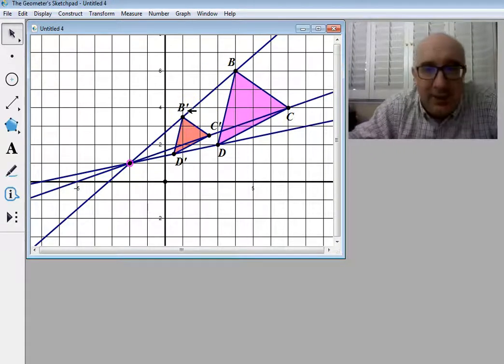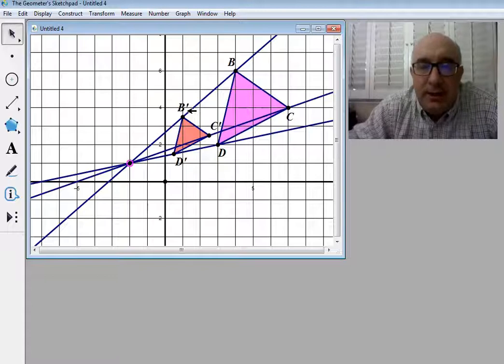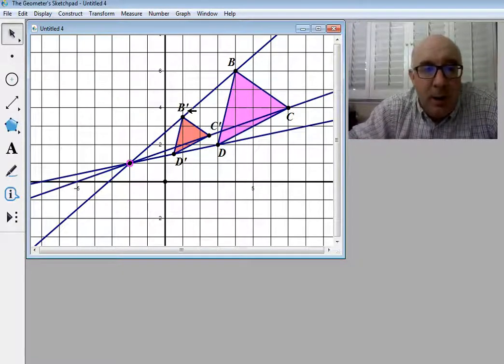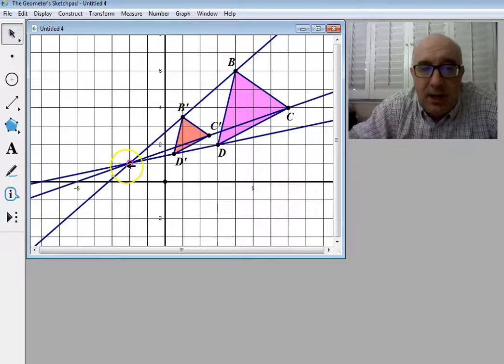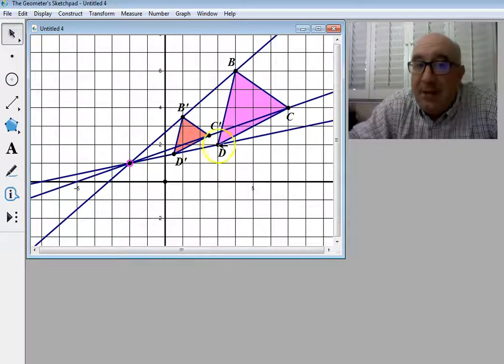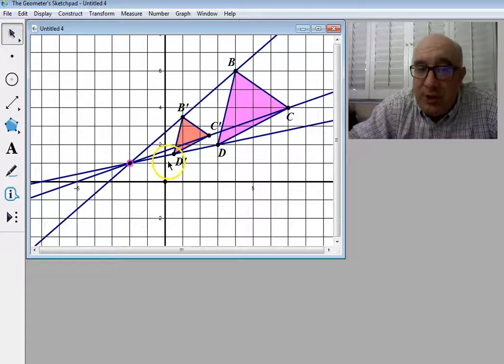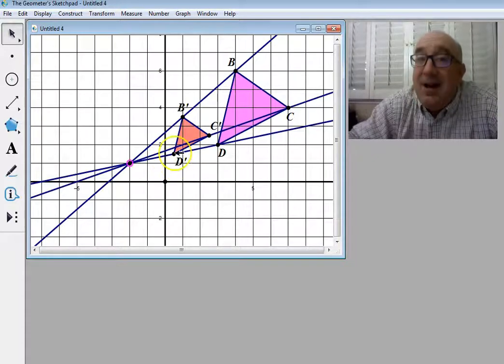And the way to find out the dilation factor is to count out how far the slope is to the locations. Now, I notice to get to D, for instance, is 1, 2, 3, 4, 5, and up 1. To get to D' is 1, 2, and a half, and up a half.